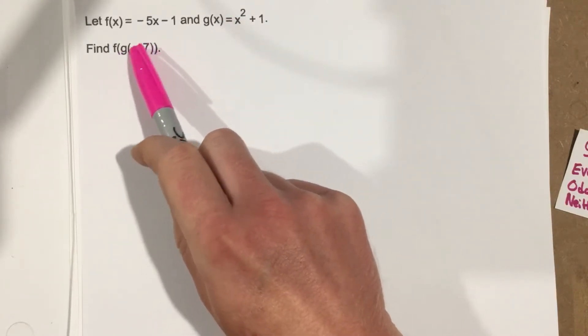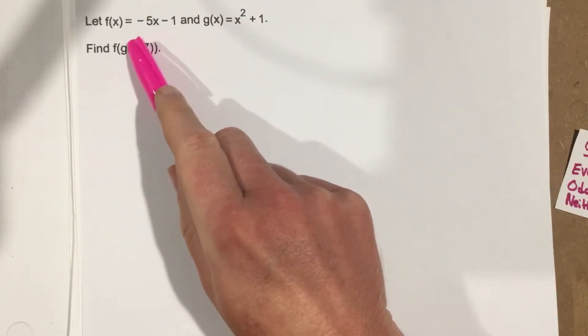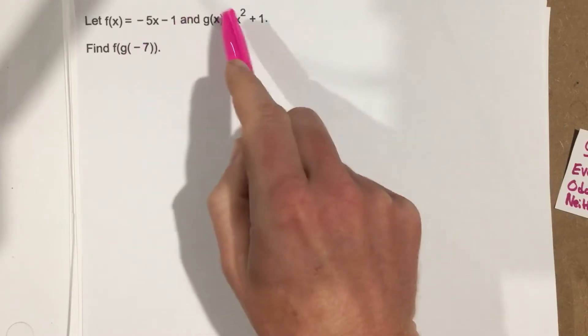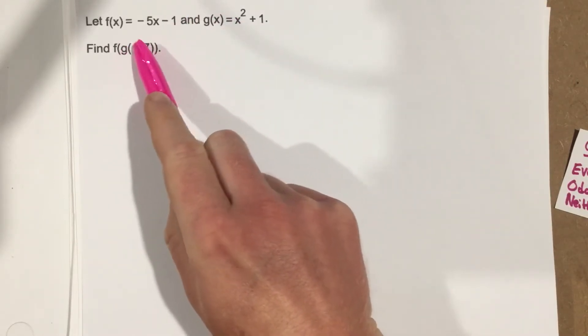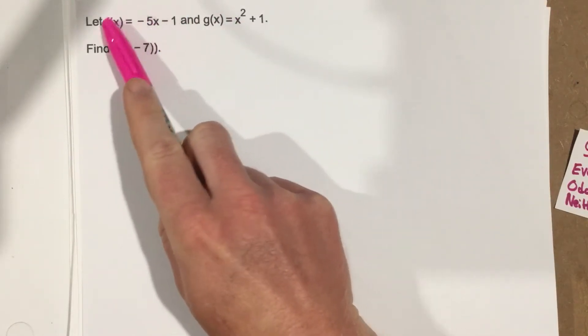Find f of g of negative 7. So they're saying plug in negative 7 into the g function and then take that output and plug that into the f function.